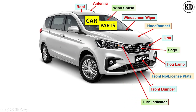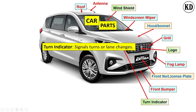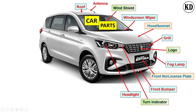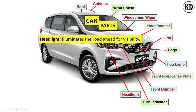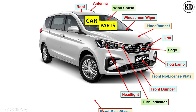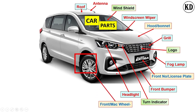The next component name is the turn indicator. The function of the turn indicator is to signal a turn or lane change while driving. The next component is the headlamp, and its function is to illuminate the road and provide visibility to the driver.